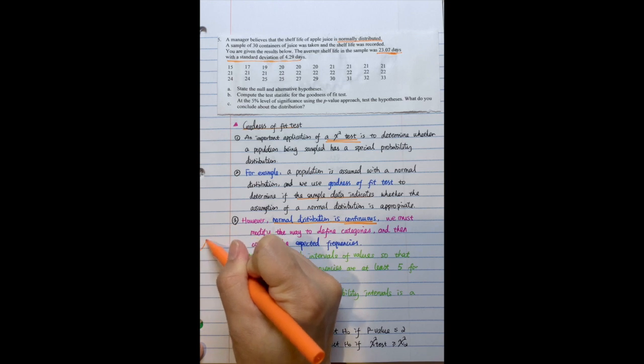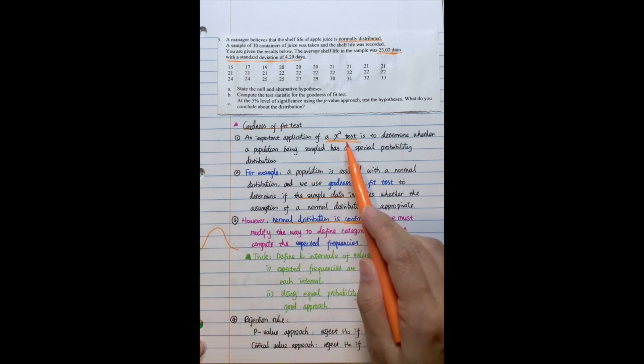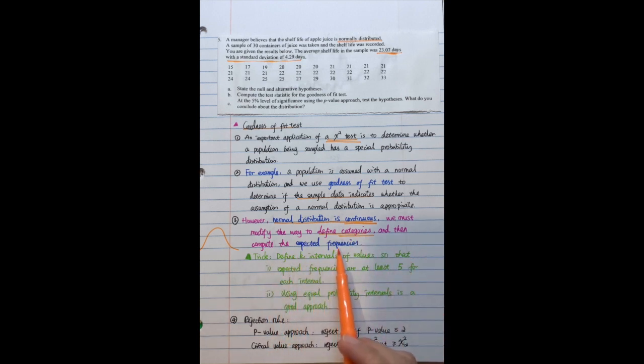However, if you want to apply chi-square test, this type of test is always using categorical data. So we must modify the way to define a category and then we need to compute the expected frequency. So there are some tricks I will introduce here.